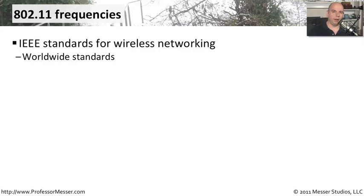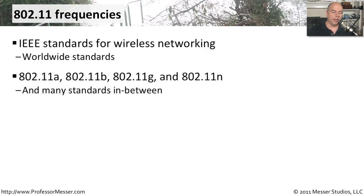On 802.11 wireless networks, there is a set of standards that defines what frequencies and channels these networks might use. This is from the IEEE, and these standards are used around the world. Looking at 802.11a, b, g, and n, you'll see that those are the primary standards that we're using today.